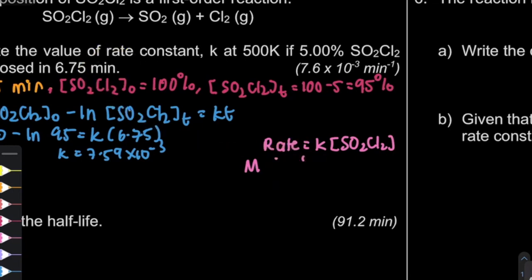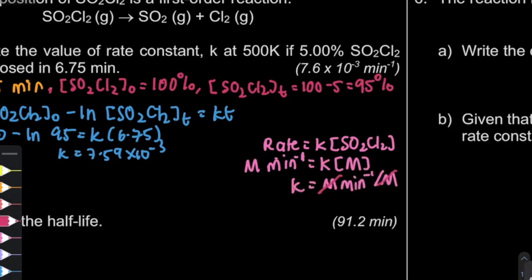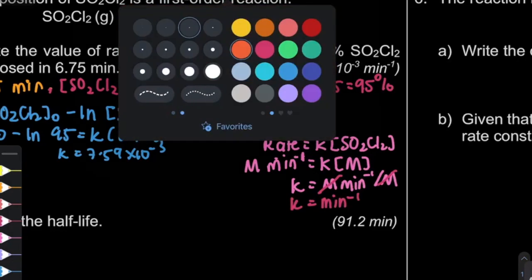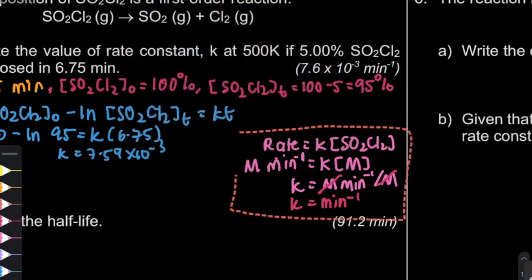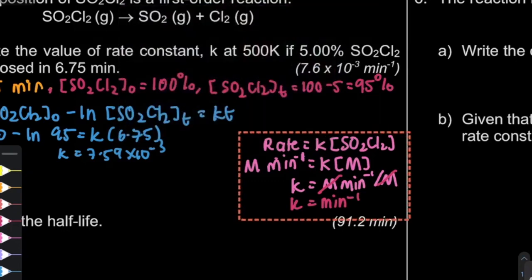For a first-order reaction, rate = K × [A]. Rate is molar per time — in this question specifically per minute — divided by molar, so the unit of K is per minute. Don't forget the unit; a correct answer without a unit still gets zero marks.